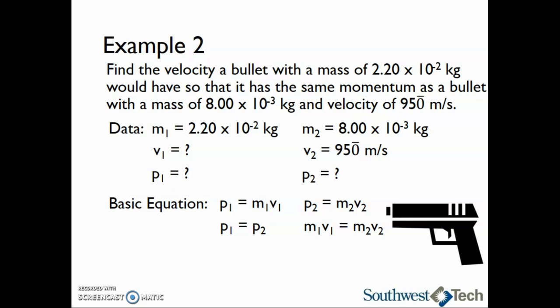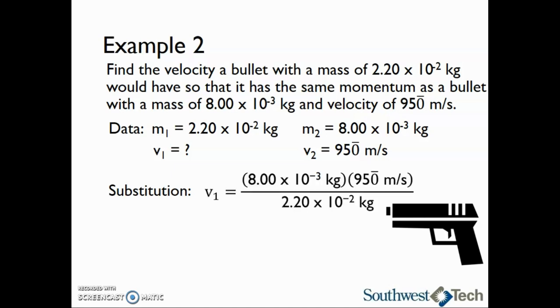We will take this equation and rearrange it to form a working equation written in terms of v sub 1 by dividing both sides by m sub 1. This gives us v sub 1 is equal to m sub 2, v sub 2 divided by m sub 1. Next, we will substitute the data we are given. v sub 1 equals 8.00 times 10 to the minus 3 kilograms times 950 meters per second divided by 2.20 times 10 to the minus 2 kilograms. This means that in order for both bullets to have the same momentum, the speed of the first bullet must be 345 meters per second. This concludes our initial discussion and examples of momentum.